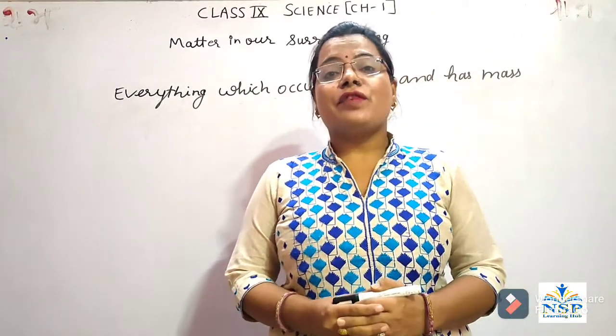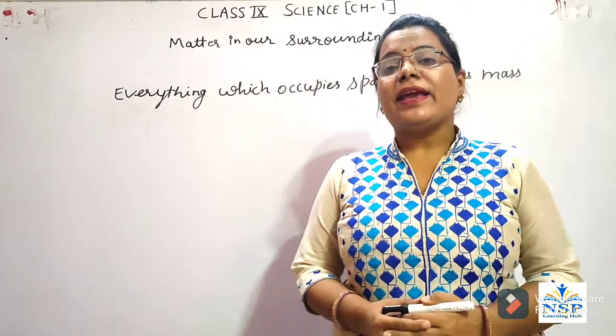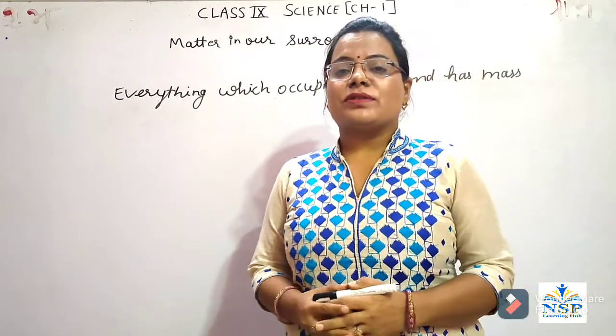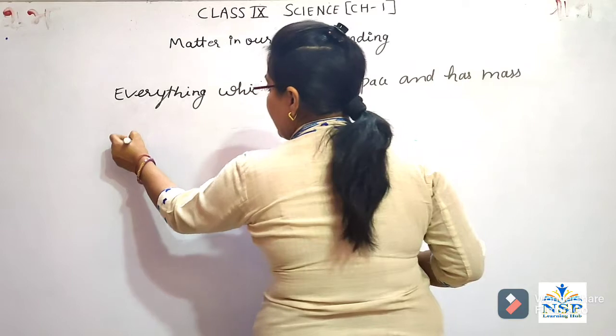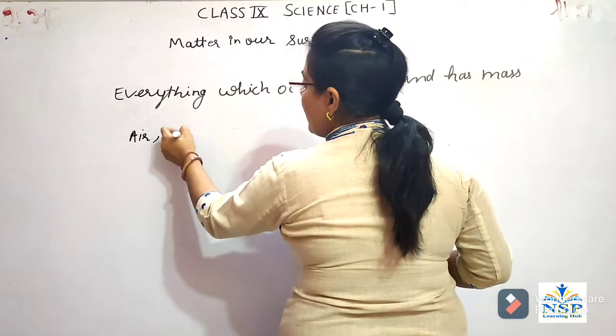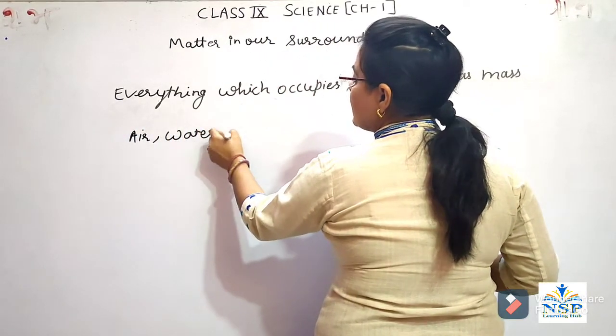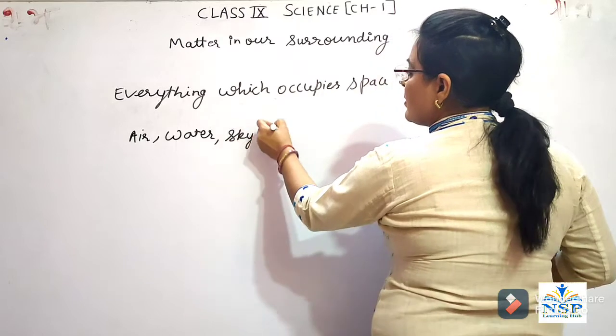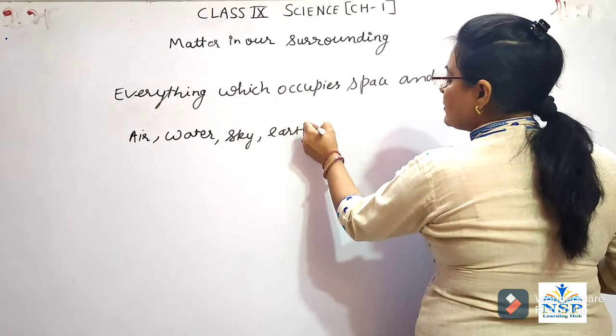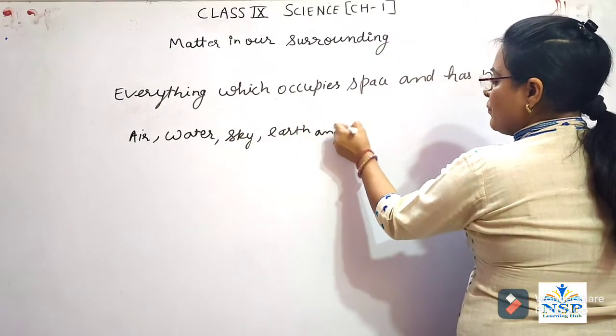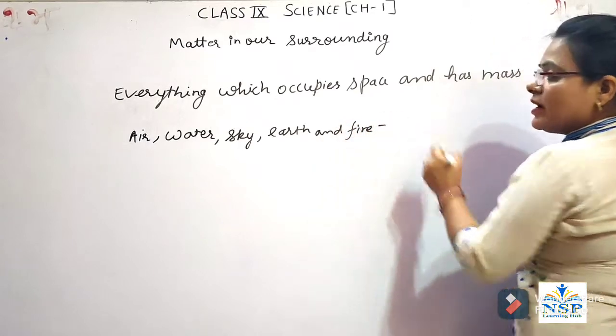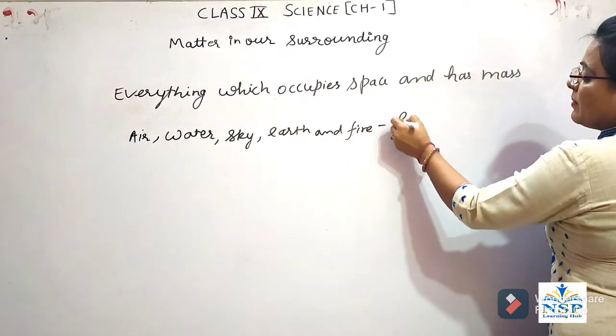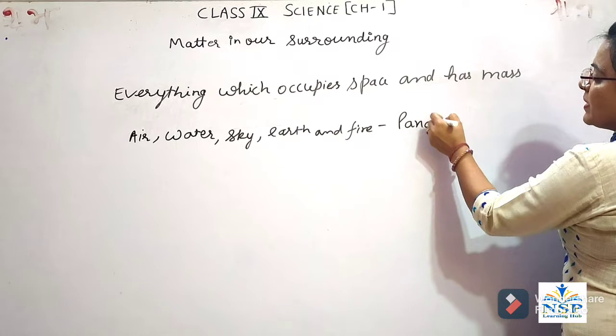Early Indian philosophers classified matter in five basic forms which are air, water, sky, earth, and fire. And they call these as the matter is made up of these panch tattu.